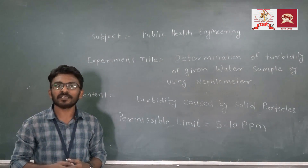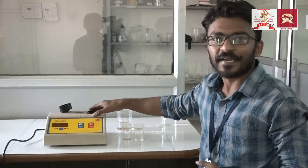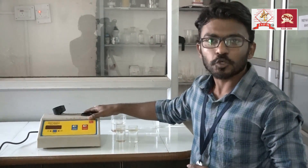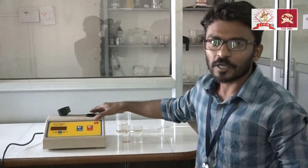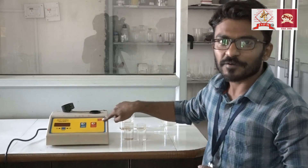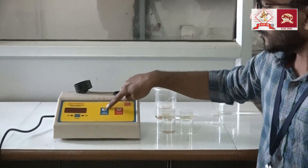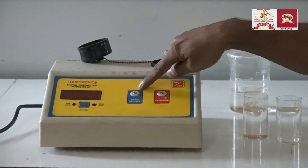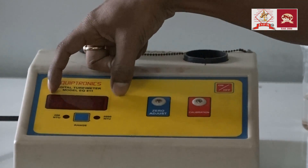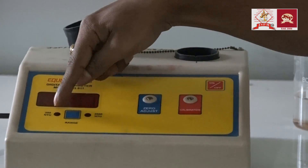We are going to conduct the experiment. This is the instrument used for finding out the turbidity of the water sample. This instrument is called a decrometer or digital turbidity meter. One button is given for on and off. There are two knobs for zero adjustment and calibration. Here is the display and here is the button for the range of turbidity.